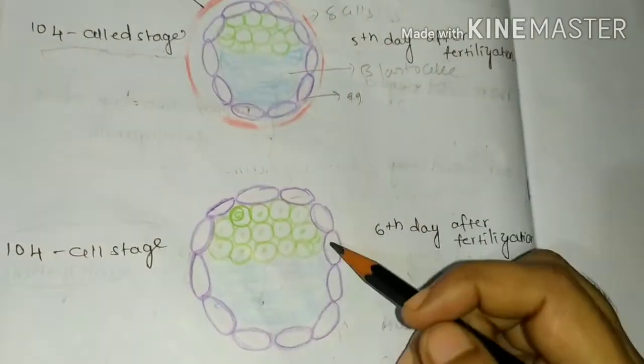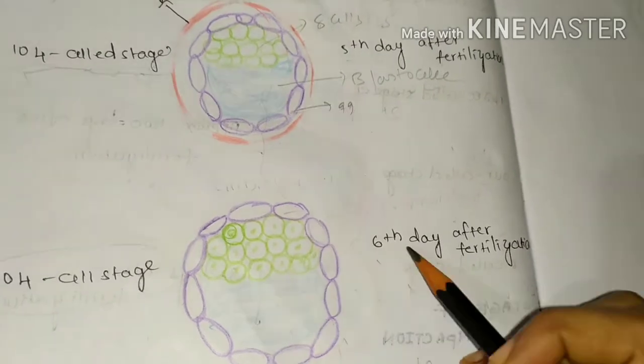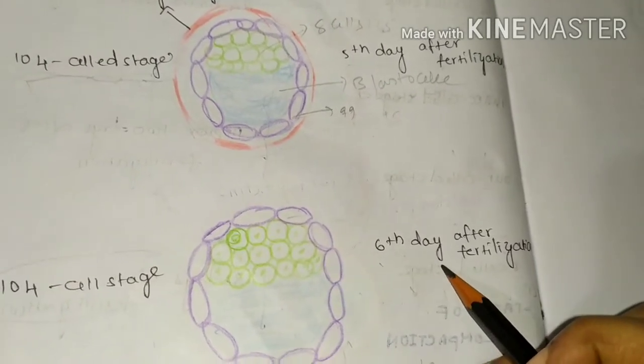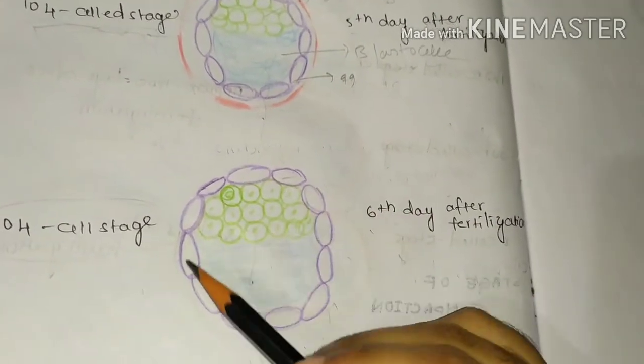And the next stage, the zona pellucida is completely disappeared. This stage is observed sixth day after fertilization. And matured blastocyst is observed here.